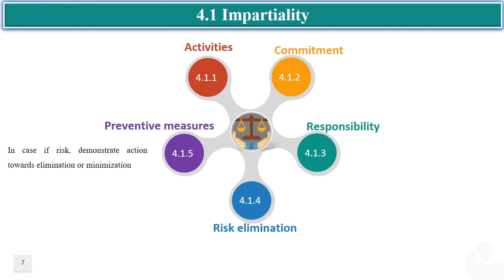Sub-clause 4.1.5 advocates that whenever a risk to impartiality is identified, the laboratory shall take all preventive measures and implement appropriate operational controls proactively to eliminate or minimize the potential risk.